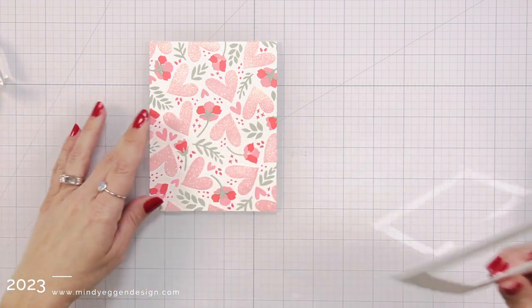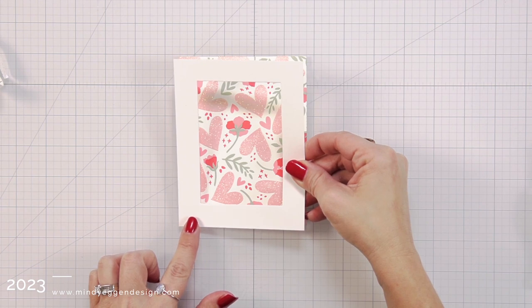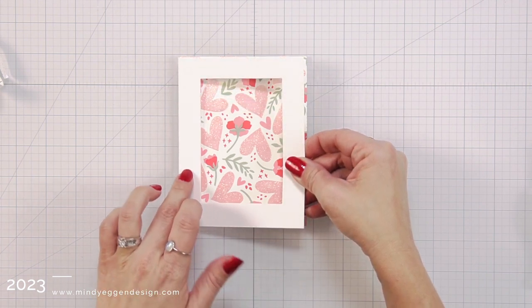I added that to the top of my stacked sentiment pieces. So now I can go ahead and remove the backing of that foam tape and add this to the front of the card. Now it doesn't matter how good I am at cutting my cardstock and measuring this perfectly.